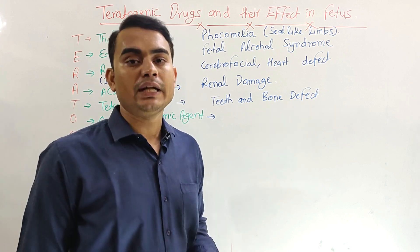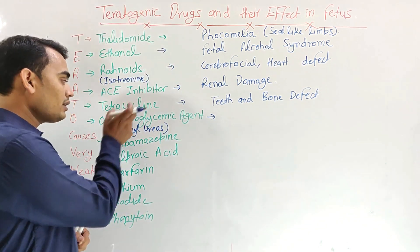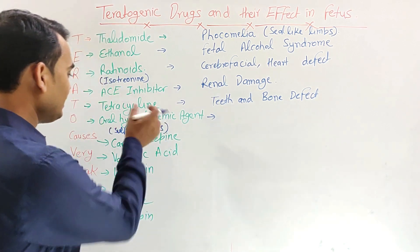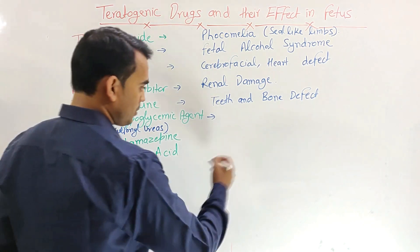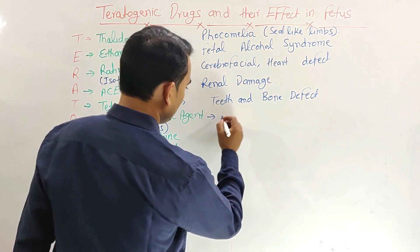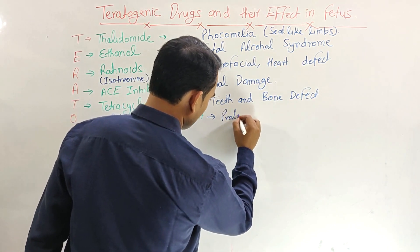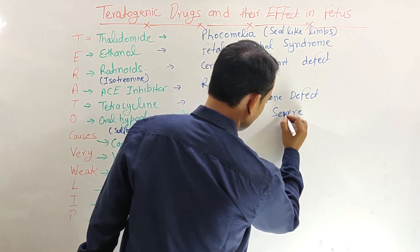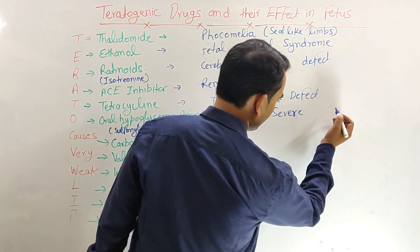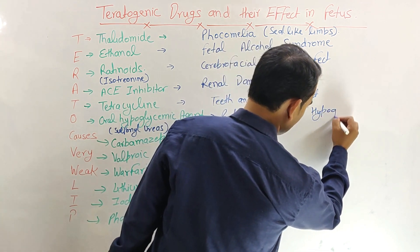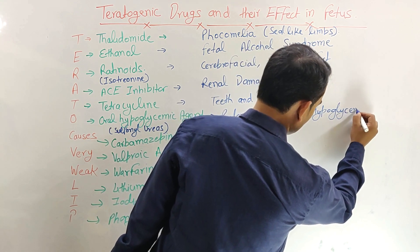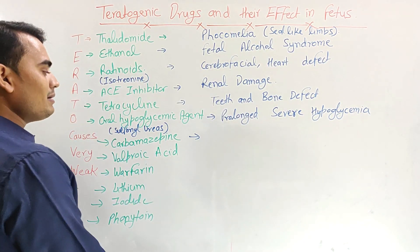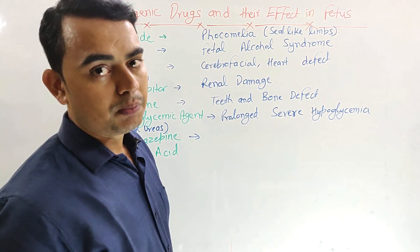Next, oral hypoglycemic agents — specifically the Sulfonylurea class. Note that other oral hypoglycemics like biguanides (Metformin and Phenformin) do not have teratogenic action. Only Sulfonylureas produce teratogenic effects, specifically causing prolonged severe hypoglycemia in the fetus. Next, Carbamazepine mainly causes neural tube defects.